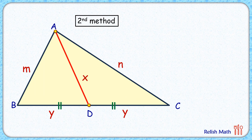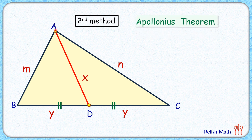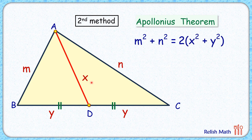For the second approach, we'll use Apollonius theorem, which states that in a triangle containing a median AD, the sum of the squares of the sides containing the median — m squared plus n squared — equals twice the median length squared plus half of the third side squared. So m squared plus n squared equals 2 times x squared plus y squared.